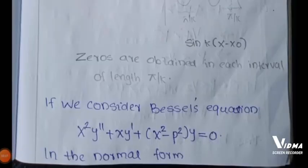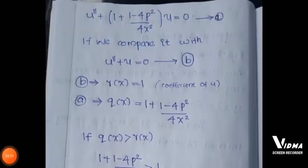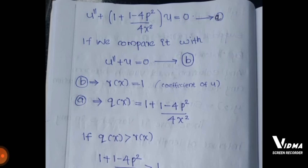If we consider Bessel's equation x²y'' + xy' + (x² − p²)y = 0 in normal form, it becomes: u'' + [1 + (1 − 4p²)/(4x²)]u = 0 (equation A). Comparing this with u'' + u = 0 (equation B): from B, the coefficient r(x) = 1; from A, the coefficient q(x) = 1 + (1 − 4p²)/(4x²).